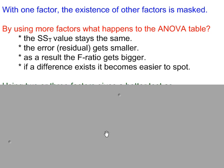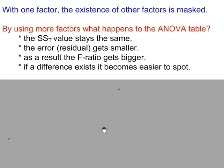By using more factors in the ANOVA table, the sum of squares total value will stay the same, whether you're using one factor or two or three factors. When you use more factors, the error or residual gets smaller, and as a result the F-ratio gets bigger.